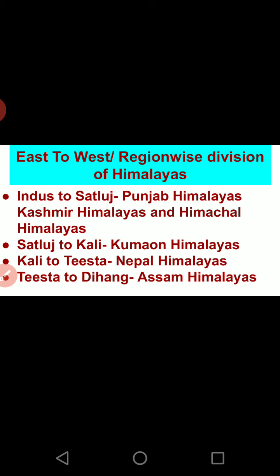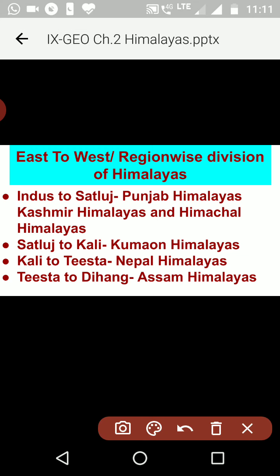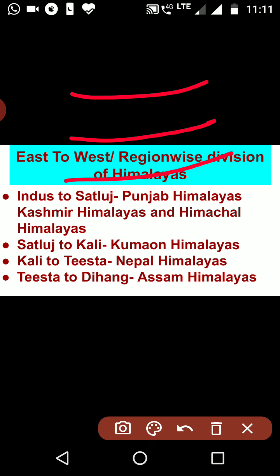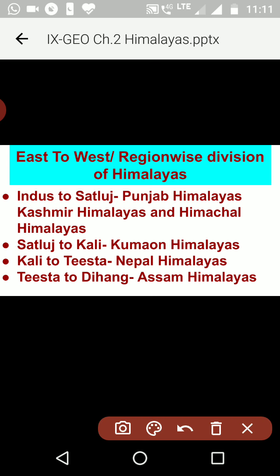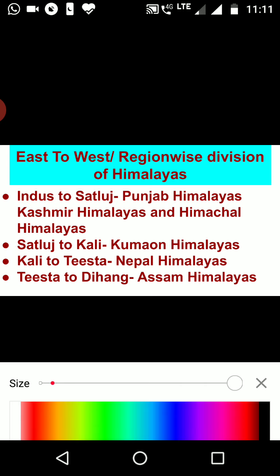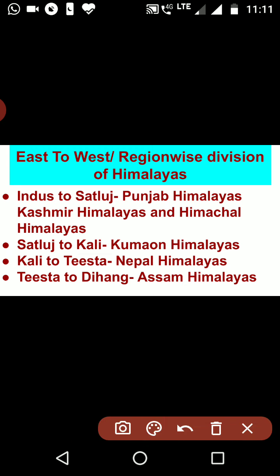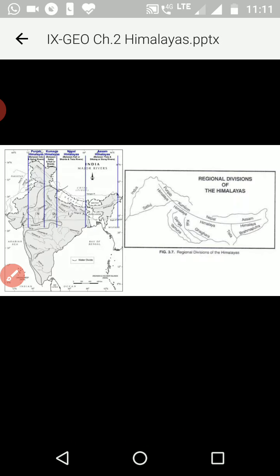We have completed the range-wise division — north to south: Himadri, Himachal, and Shivaliks — called the longitudinal division. Now we will study the region-wise division, also called the west-to-east division.